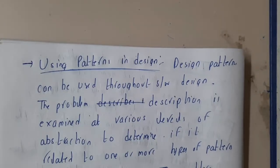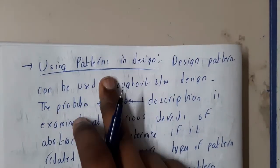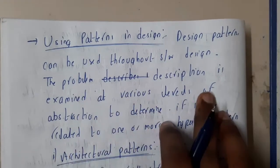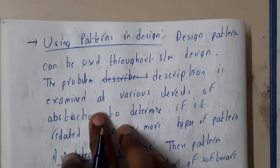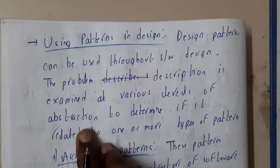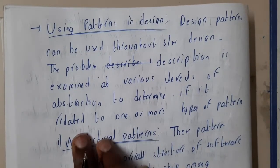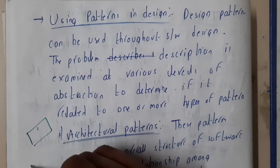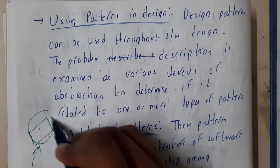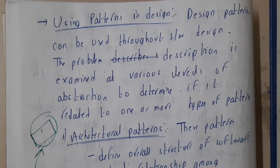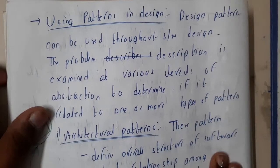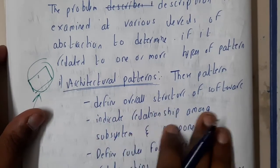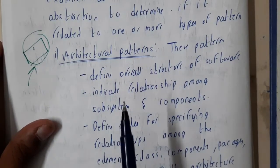Design patterns can be used throughout the software design process. The problem description is examined at various levels of abstraction to determine if it is related to one or more types of patterns. You need to do a proper analysis before selecting a pattern. You will be checking for architectural patterns, which define the overall structure of the software, and this structure should match your current software structure.